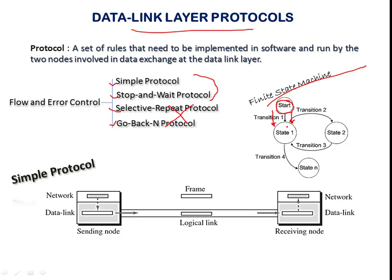If any event occurs, the transition moves from one state to another based on that event. For example, in state one, if a zero occurs, the transition event is zero and the action is a transition from state one to state two. When a logic one occurs, there is a transition from state one to state N.